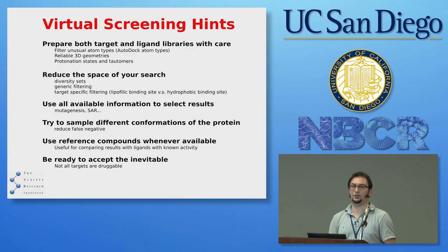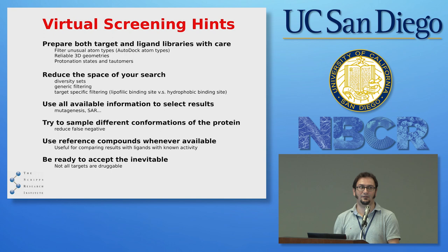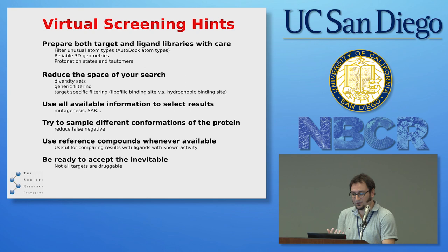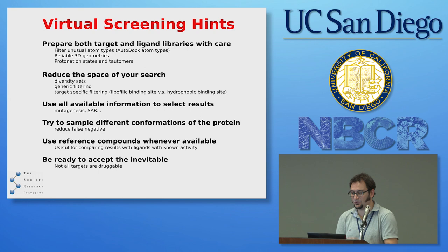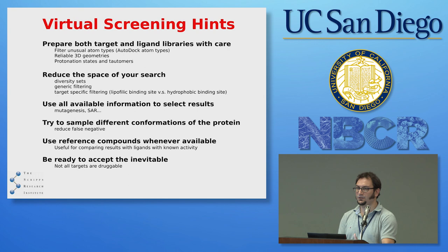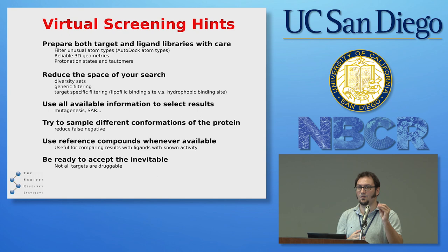If you know a particular residue is crucial for activity, favor ligands interacting with that residue. Build a structure-activity relationship — if all known molecules binding your target have a phosphate or sulfate group, a molecule with a strong negatively charged group is more likely to be true than a neutral one. Even if your molecule is not particularly flexible, try to sample different conformations of your target, as this reduces false negatives — meaning you don't lose active molecules just because you didn't sample the protein's conformational space.